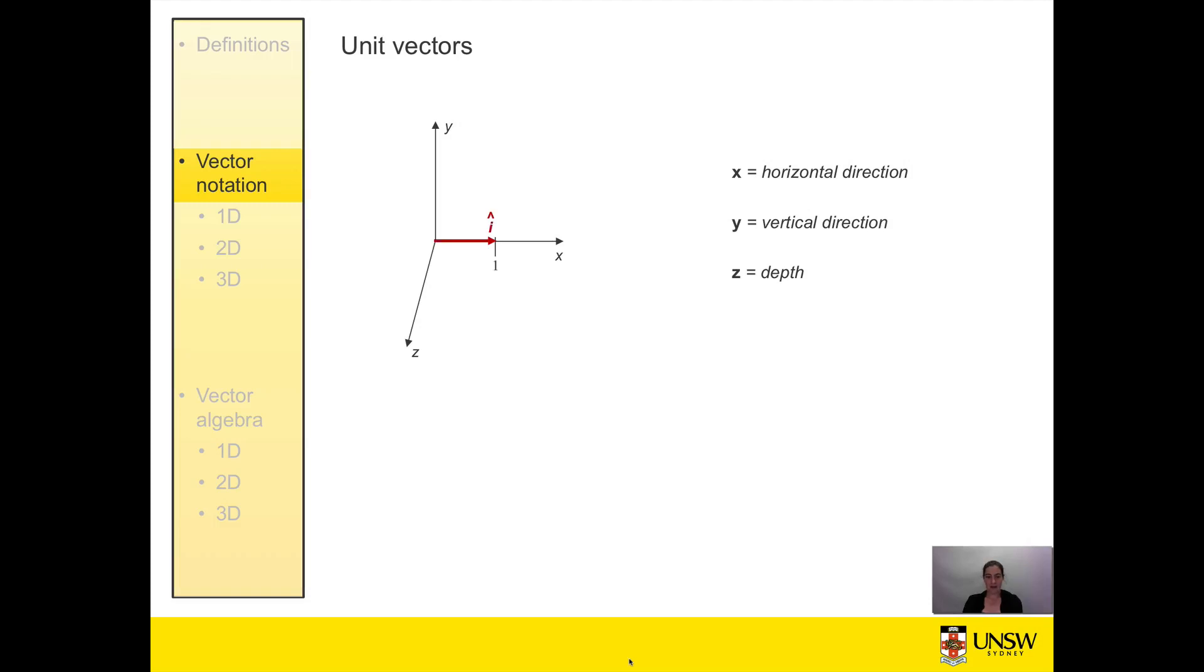We use an i unit vector for the x direction, j for the y direction, and k for the z direction.